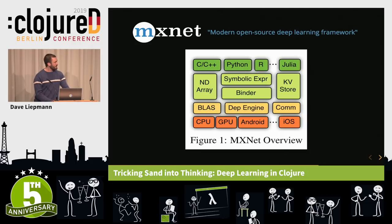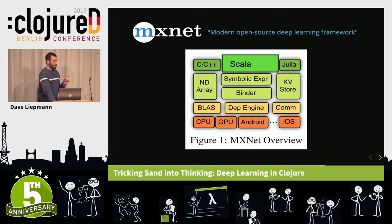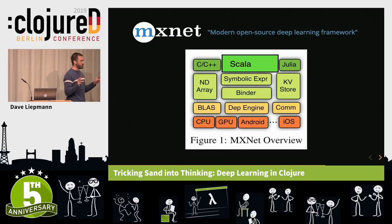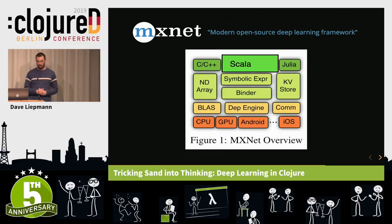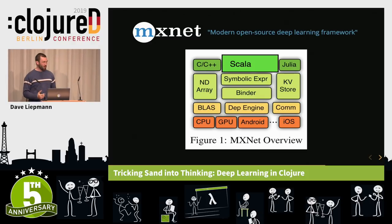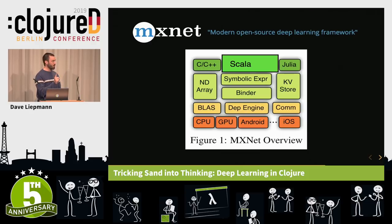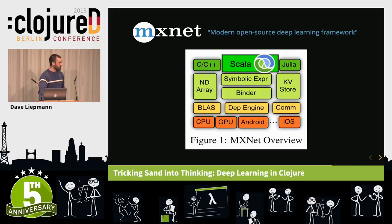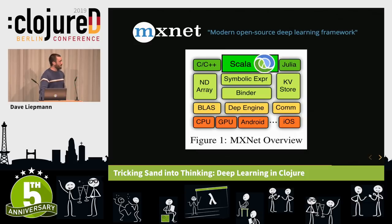So how does Clojure fit in? Clojure is not on that list, but Scala is — and Scala compiles to JVM bytecode. Through the hard work of Karen Meyer, we have piggybacked on the Scala bindings. Scala has first-class support, and Clojure is not yet a full-fledged member of the MXNet community. We are currently reliant on the Scala bindings for what we can do within MXNet.